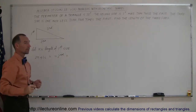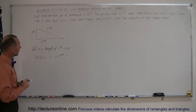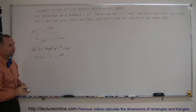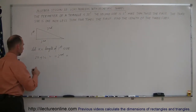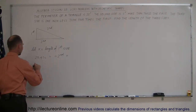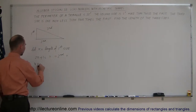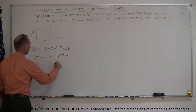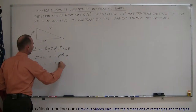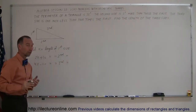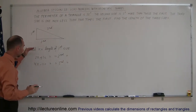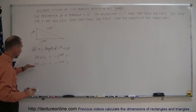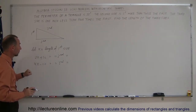Now the third side: it is one inch less than four times the first, so four times x would be four times the first, and one inch less means we subtract one — so 4x minus 1 equals the length of the third side. Now we have all three sides expressed in terms of x.